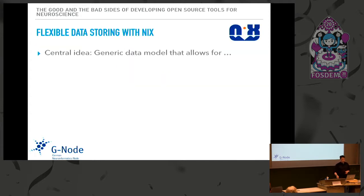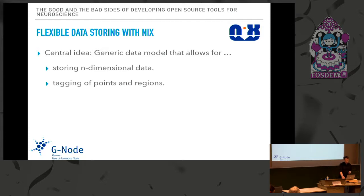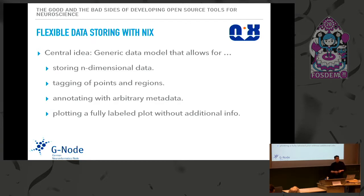The core idea behind NIX is to generate a generic data model that allows storing n-dimensional data irrespective of what the data is — doubles, floats, boolean strings, whatever. We want to be able to highlight regions and points of interest in this data, and annotate it with arbitrary metadata down to the single data point we record. One of the core ideas is that the entities carry just enough information that we can draw a basic plot of the data without any additional sources.